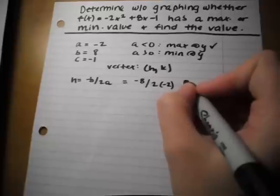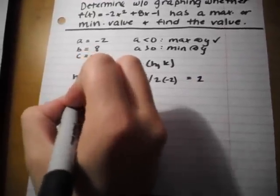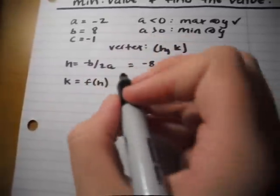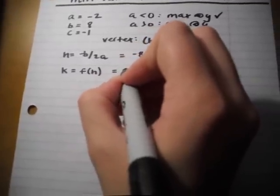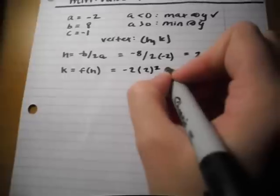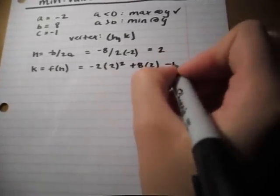k = f(h), which equals -2(2)² + 8(2) - 1, which equals 7.